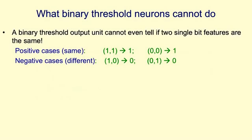Here's a classic example. What we're interested in is what can you learn to do with the binary threshold decision unit by changing its weights. There are very simple things that it can't learn to do. Consider a problem in which there are two positive cases and two negative cases, and the features are just single bit features with values either one or zero. The two positive cases are both features being on, giving output one, or both features being off, giving output one. The two negative cases are when one feature's on and the other's off, giving output zero. So all we're asking the binary threshold unit to do is decide whether the two features have the same value — and it can't even learn to do that.